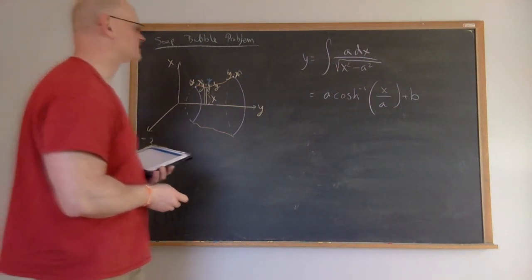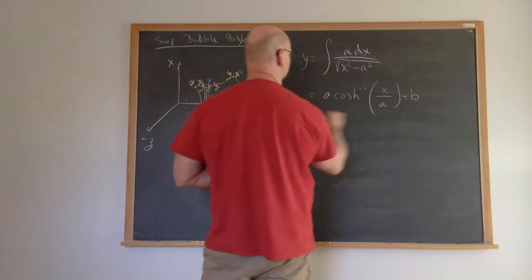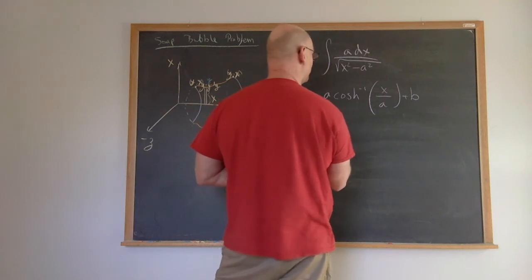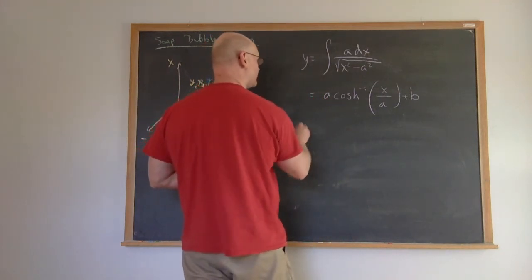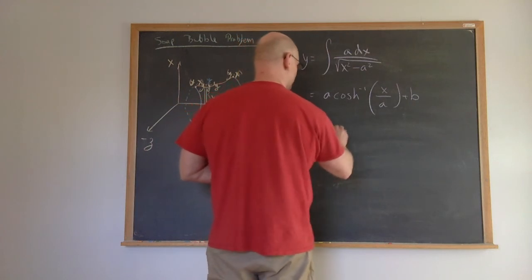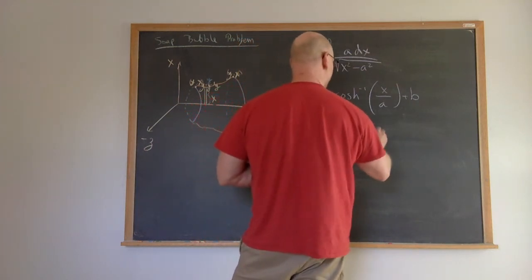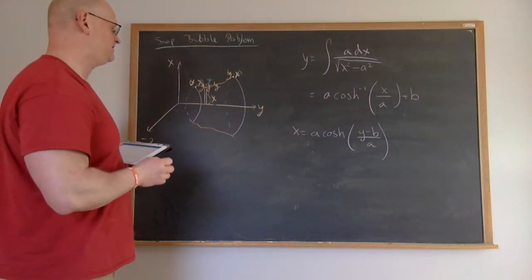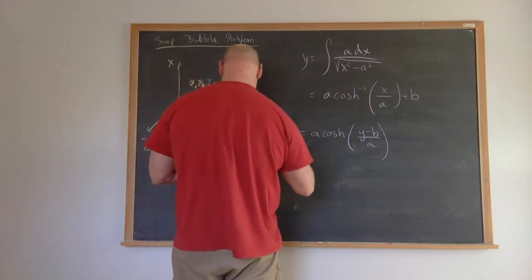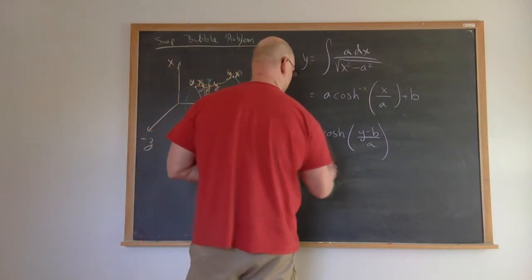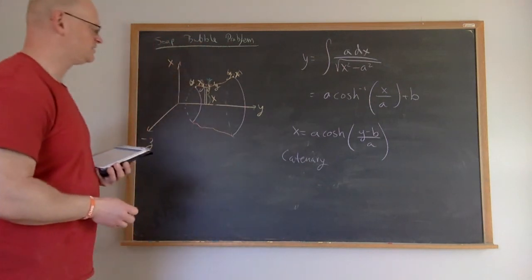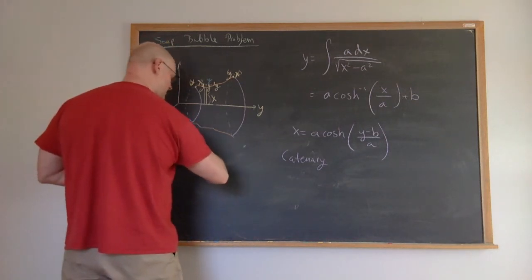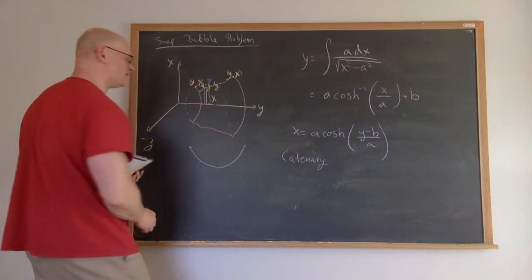Solving for x, we subtract b, divide by a, and take the hyperbolic cosine of both sides, giving x = a·cosh((y - b)/a). This solution is called a catenary — the curve describing a flexible chord hanging between two fixed points.